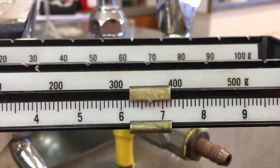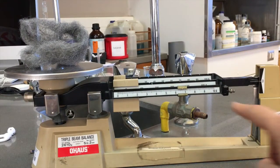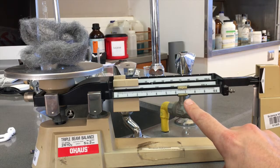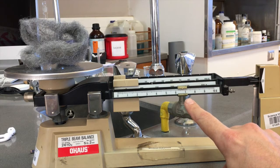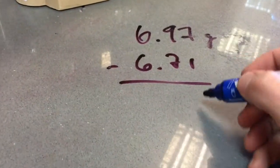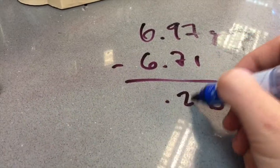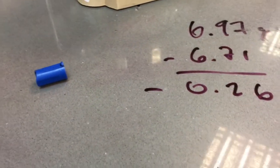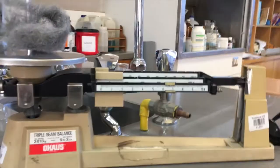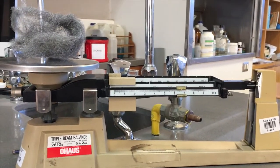Okay, what do you think that reading is? I'm going to do that reading. It looks like 6.71. Now if we do the subtraction, we get a difference of 0.26 grams. So it looks like the steel wool got lighter.